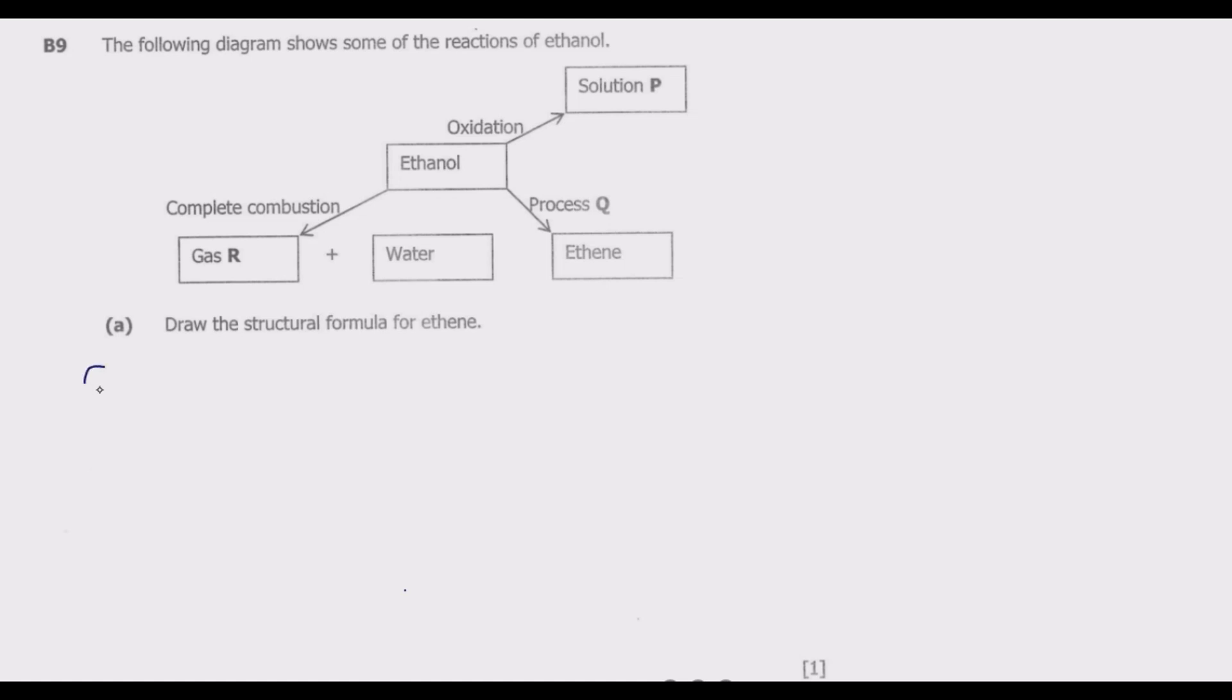Ethene follows the generic formula of alkenes, which is CnH2n. Ethene has two carbons, so we have C2H4. It has a double bond between the carbons. Because of this double bond, it has four hydrogens total. We have one hydrogen here, one here, another here, and another here. Because of the double bond, we don't have hydrogens on top and bottom, so this gives us the structural formula.